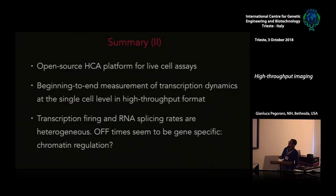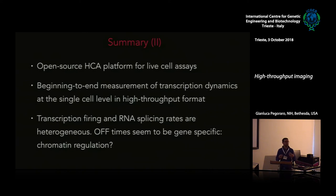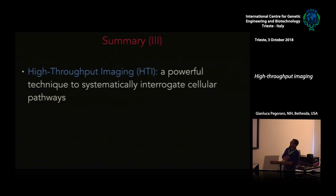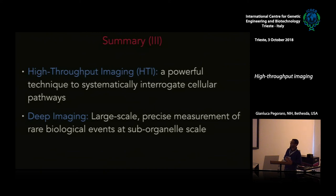To summarize the second story: we developed an open-source high-content image analysis platform for live cell assays, used to provide collaborators with end-to-end measurements of transcription dynamics at the single-cell level in a fairly high-throughput format. Transcription firing and RNA splicing rates appear heterogeneous, and off-times seem to be gene-specific. This opens up the possibility of using this assay to perturb the system and test whether chromatin regulation, promoter-enhancer contacts, or other molecular mechanisms underlie these dynamics. High-throughput imaging is a powerful technique to systematically integrate cellular pathways.